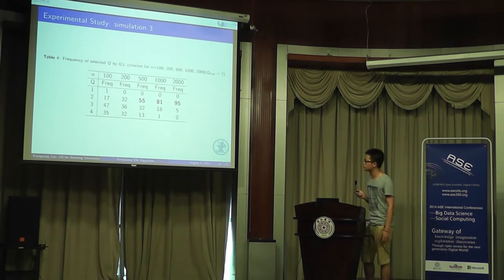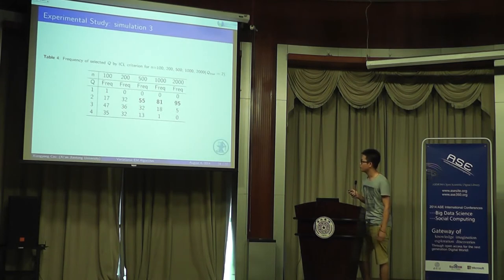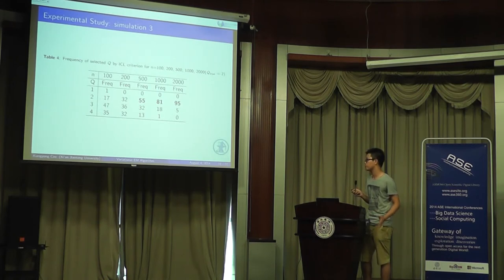In simulation 3, we designed the experiment to validate the model selection criteria. We use the true group Q equals 2. For each graph size, we simulate 100 graphs. We can see from the table that when the graph size N is larger than 500, the ICL criteria can correctly select the number of groups. For example, when N equals 500, in the 100 times, we select correctly 55 times.